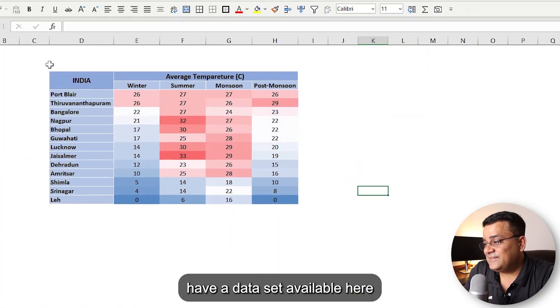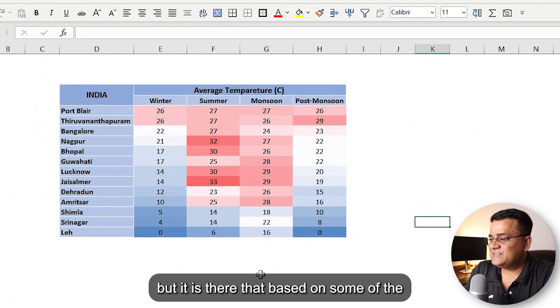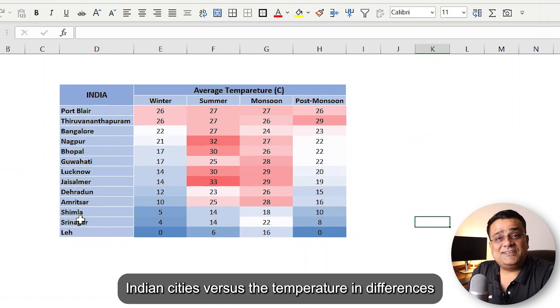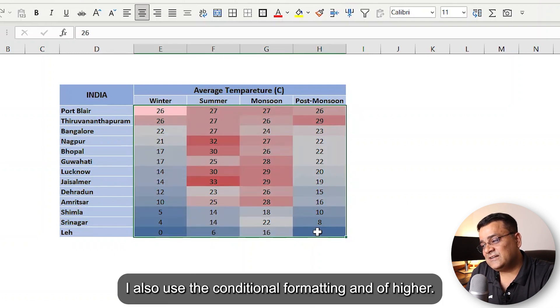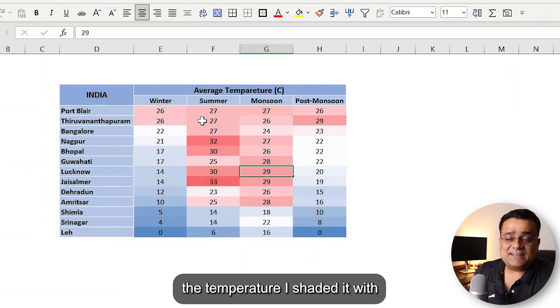You can see I have a dataset available here based on some of the Indian cities—what's the temperature in different seasons. Using this particular data, I also use the conditional formatting, and if higher the temperature, I shaded it with one type of grade.